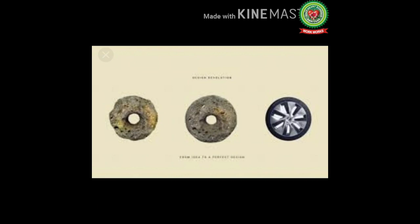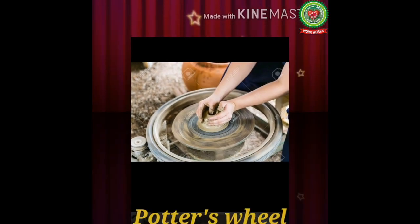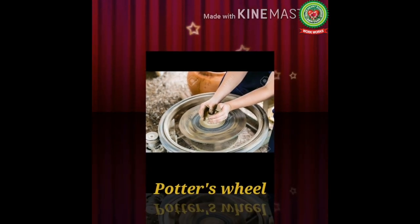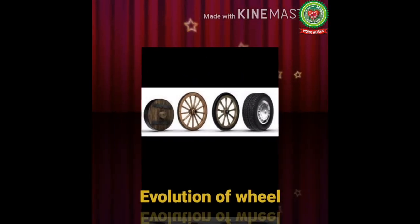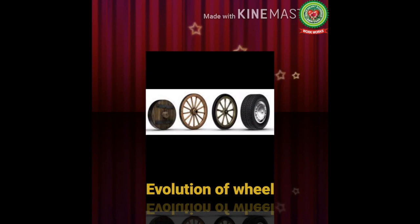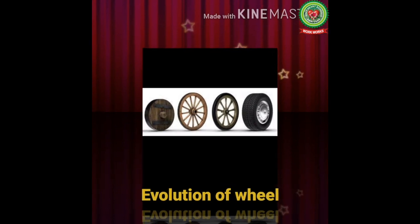Then the Sumerians were the first to discover the wheel. The wheel we see today is totally different from the wheel discovered by the Sumerians, as it was made of clay, whereas nowadays wheels are made of rubber. Here you can see the potter's wheel which was turned upright and rolled by the Sumerians, and here you can see the evolution of the wheel, starting from the left and going towards the right.